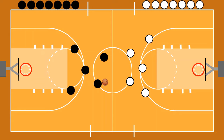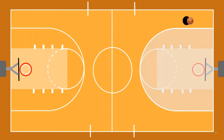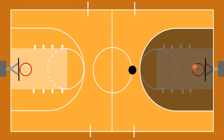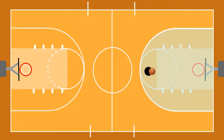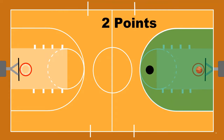Your opponent, here in a white and black uniform, also has five players and seven substitutes. Your objective is to put the ball in your opponent's basket, and their objective is to put the ball into your basket. Depending on where you throw the ball from, you get different points. If you throw from anywhere outside the blinking area, you get three points. Inside that area, you get two points.